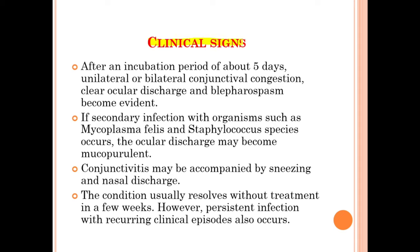Moving on, we will discuss about the clinical signs of feline chlamydiosis. After an incubation period of about five days, unilateral or bilateral conjunctival congestion, clear ocular discharge, and blepharospasm become evident. If secondary infection with organisms such as Mycoplasma felis and Staphylococcus species occurs, the ocular discharge may become mucopurulent. The conjunctivitis may be accompanied by sneezing and nasal discharge.